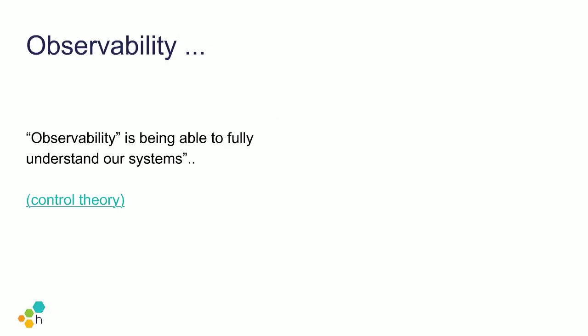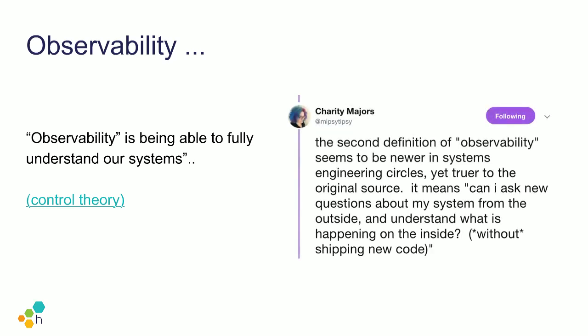Observability — I expect you're hearing the term a lot lately, but I'd like to make sure we're all using the same definition. This definition is from Wikipedia: in control theory, observability is a measure of how well internal states of a system can be inferred from knowledge of its external output. We've taken this term to heart at Honeycomb because it really reflects what we're trying to offer — we want our users to be able to figure out what's going on inside their systems without having to ship new code. Our co-founder and CTO Charity Majors expands on this subject in a tweet, and if you don't follow Charity on Twitter, I recommend you do.